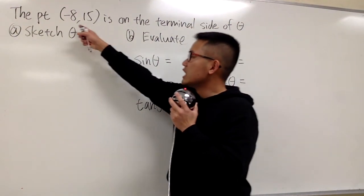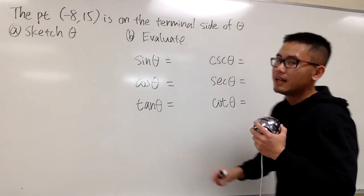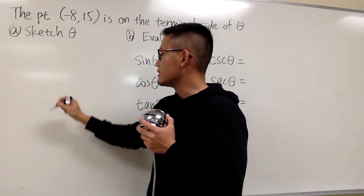Okay, we are given the point negative 8 comma 15, and we know this is on the terminal side of the angle theta. Let's go ahead and make a sketch first.